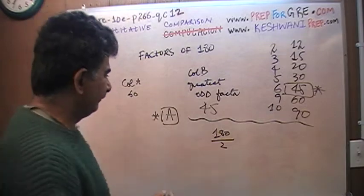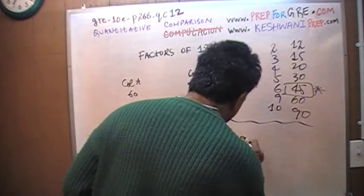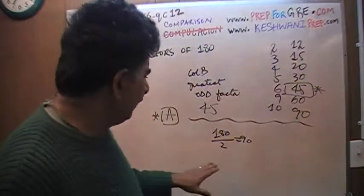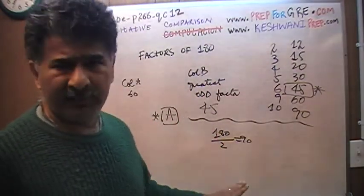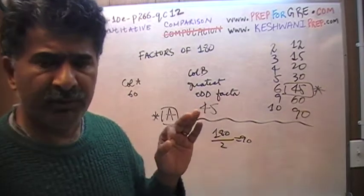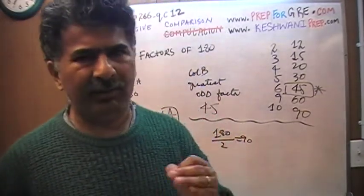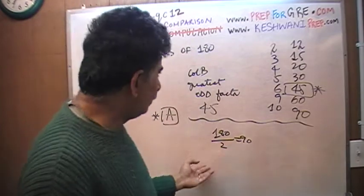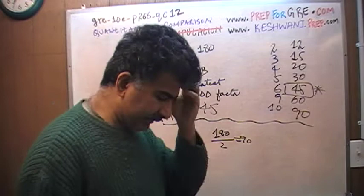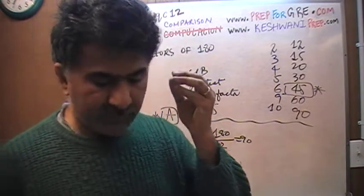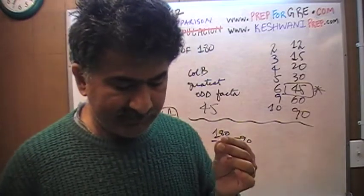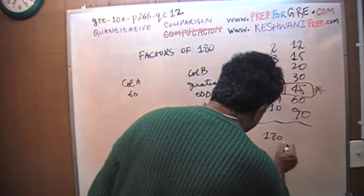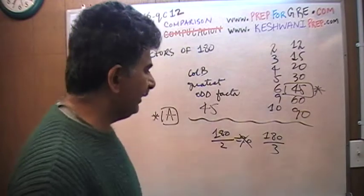The lowest even number that I can find is 2. 180 divided by 2 is 90. But I didn't mean to say the lowest even number, I meant to say the lowest factor that you can find. The lowest factor, of course, is 1, but dividing 180 by 1 is not going to get you anywhere. So the next factor of 180 is 2. If you divide 180 by 3, you get 60.